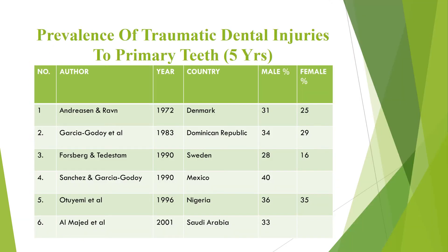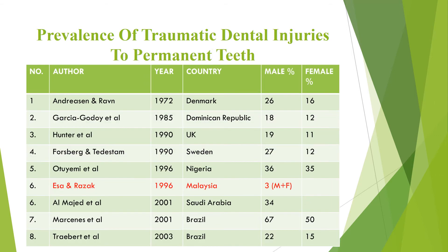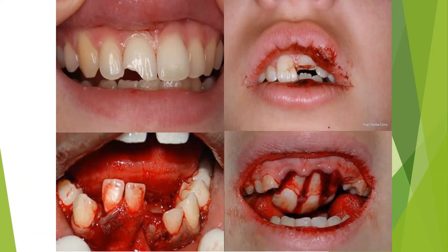Regarding the prevalence of traumatic dental injuries in primary teeth — children less than 5 years old — there are limited recent Malaysian studies. One Malaysian study by Issa and Rasak in 1996 had a very small sample size. However, dental trauma in primary teeth is prevalent worldwide. The types of trauma shown include incisal edge fracture, crown fracture, lingual displacement of teeth, and near-complete avulsion.